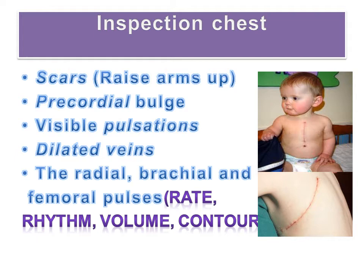The radial, brachial and femoral pulses should be assessed for rate, volume and contour. Assessment of the femoral pulse is extremely important and shouldn't be overlooked. Once the femoral pulse is found, use your other hand to palpate the brachial pulse and assess for brachial-femoral delay, which may indicate coarctation of the aorta. Also check peripheral circulation by palpating the brachial and posterior tibial pulses.